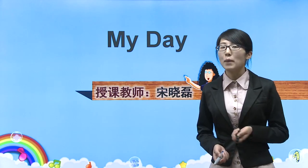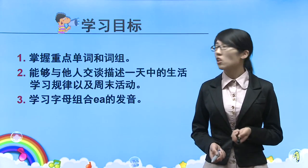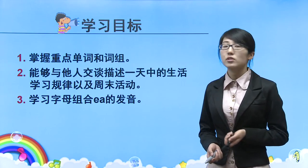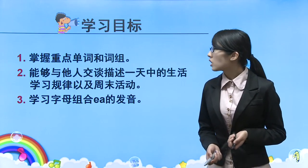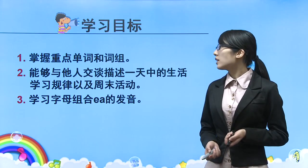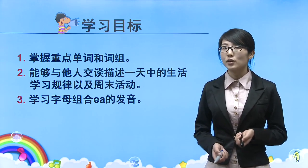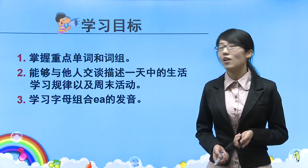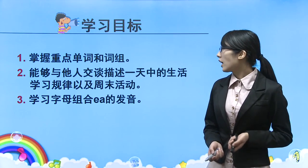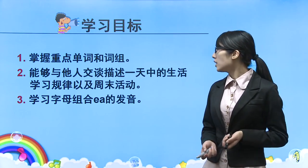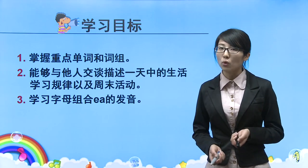那这一单元主要介绍的是一天当中的生活安排、活动安排。 Now let's say the learning aims — 学习目标。The first one: 掌握重点单词短语，重点单词短语，每一个单元都在强调。And the next one: 能够与他人交谈描述一天中的生活学习规律以及周末的活动。